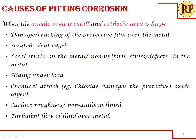Let us see in detail all the causes of pitting corrosion. As already stated, when the anodic area is small and cathodic area is large, pitting corrosion occurs. Why does the anodic area become small? When there is damage or a crack over the protective film, or there is a scratch or a cut edge, if there is local strain on the metal, non-uniform stress, or any defects on the metal, that defective area becomes the anode.